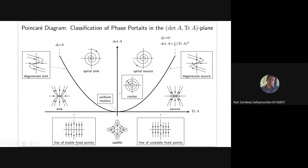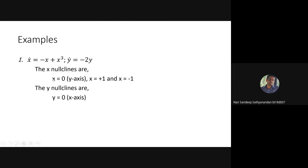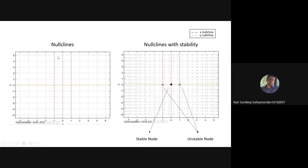Now a few examples. For x-dot = -x + x³ and y-dot = -2y, the x-nullclines are found by setting x-dot = 0, giving x = +1 or x = -1. The y-nullcline is found by setting y-dot = 0, giving y = 0. In the plot, black solid dots represent stable nodes and hollow dots represent unstable nodes.